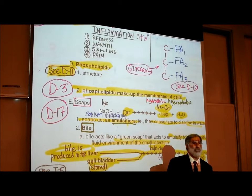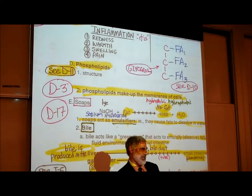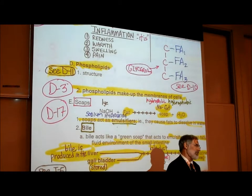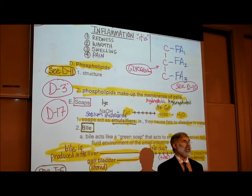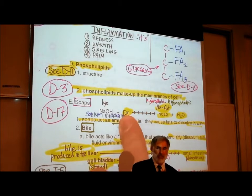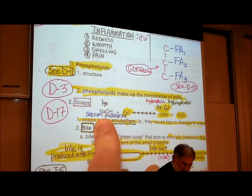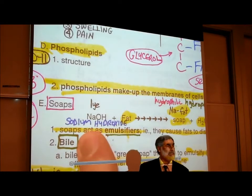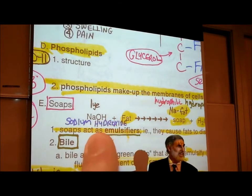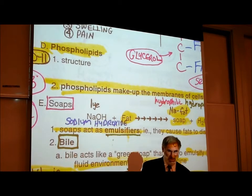Hundreds of years ago, they made soap by taking fat from animals — from sheep, cows, or commonly whales. All you do is mix the fat from some organism with lye. Lye is sodium hydroxide, or caustic soda — the active ingredient in Drano. They would mix sodium hydroxide with fat.